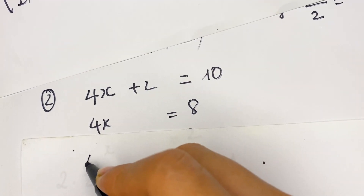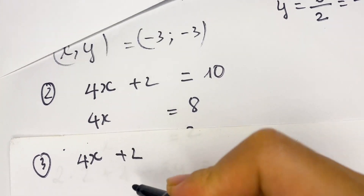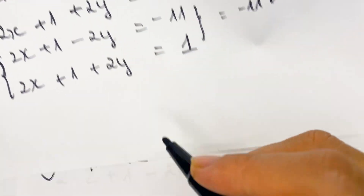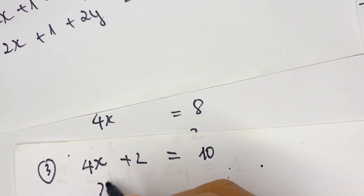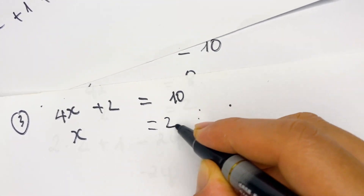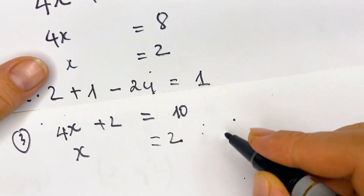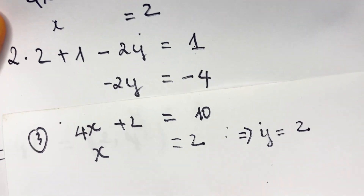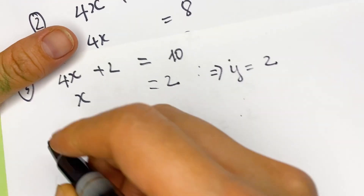For situation 3: 4x plus 2 equals 11 plus negative 1 equals 10, so x equals 2. Since x equals 2, you can see this is the same as situation 2, so y equals 2 as well.